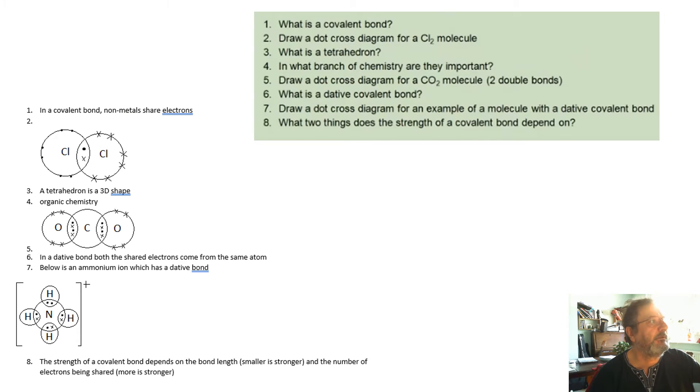A covalent bond is when they share electrons. You need to be able to do these dot cross diagrams. So that's a Cl2 molecule. A tetrahedron is this 3D shape. It's like a triangle at the bottom with an apex at the top. And it's very important in organic chemistry, which is kind of the chemistry to do with living things. It's carbon, hydrogen, oxygen.